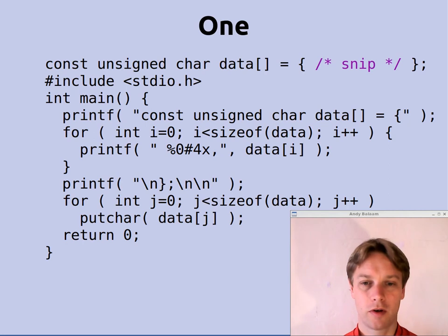Then it loops through the data array and prints out all those numbers as numbers. So it's printing out exactly what you would see at the top if it wasn't snipped out. Then you see a printf that does a new line in curly brackets.